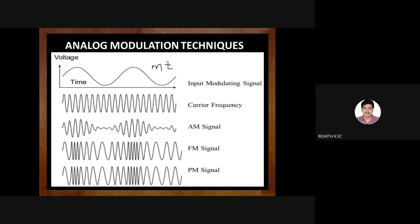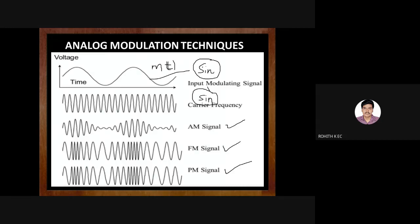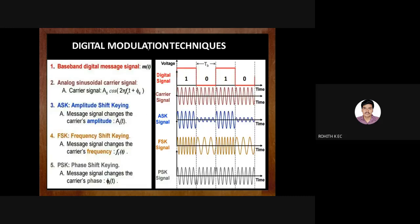In analog modulation, the message signal m(t) is a sinusoidal signal, and the carrier c(t) is also sinusoidal. In AM, the amplitude is varied in accordance with the carrier by keeping frequency and phase constant; similarly for FM and PM. The key point: both m(t) and c(t) are sinusoidal in analog modulation. But in digital modulation — ASK, FSK, PSK — the input message signal m(t) is a pulse or square waveform.